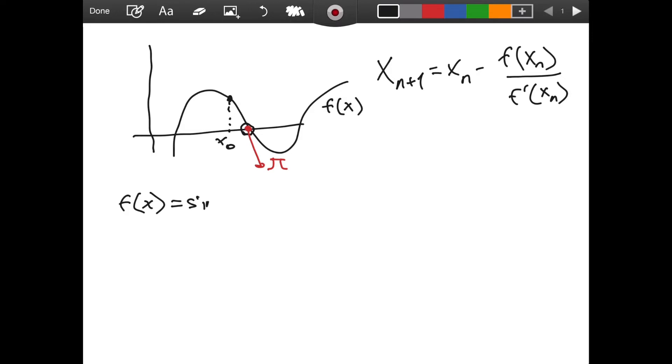Because when you plug in pi for x here you will get zero. So we note that this is very important to note: f(pi) is equal to sin(pi) and this is equal to zero. So we can use Newton's method to approximate pi.